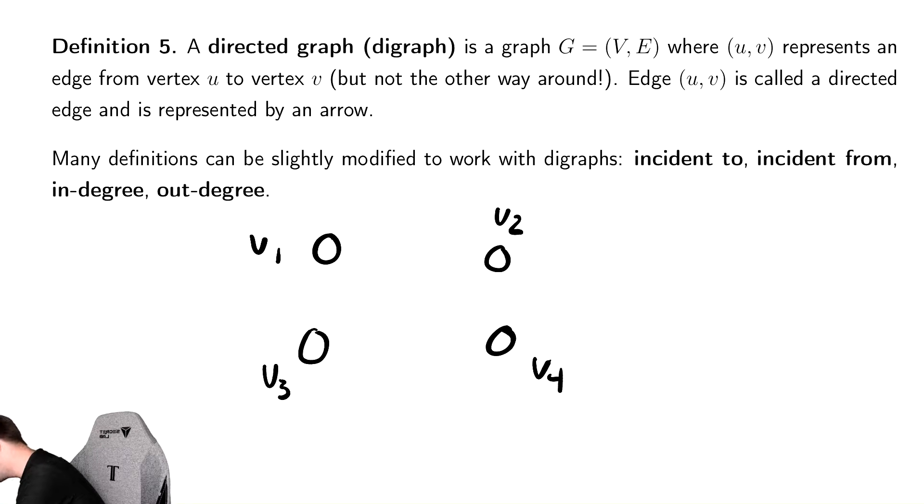And when I draw the edges between them, I'm going to draw them with directionality. So, I can go from V1 to V2, but not necessarily both directions. You can have edges which go both directions. So, I could go from V2 to V4 and potentially also go back.